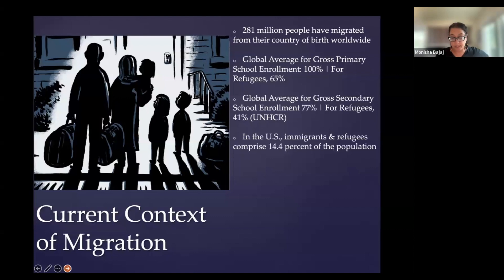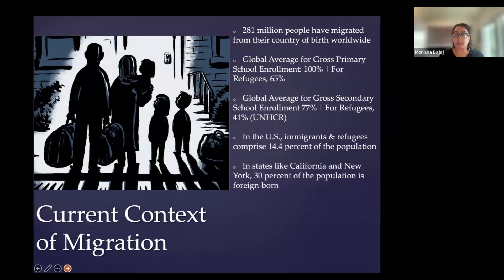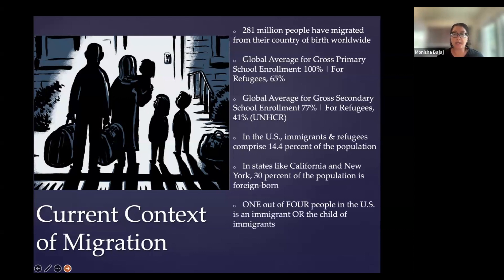When we look at the United States, where much of the research I'm going to share today is based, immigrants and refugees comprise, in the latest national census, 14.4% of the population. In states such as California and New York, with higher numbers of immigrant and refugee populations, about 30% of each of those states' population is foreign-born. And across the country, one out of four people is an immigrant themselves or the child of immigrants.